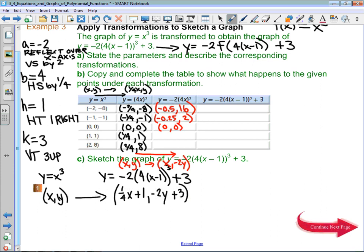1 fourth, comma, 1 is going to turn into 0.25, comma, negative 2. And 2 fourths, comma, 8 will turn into 0.5, comma, negative 16.